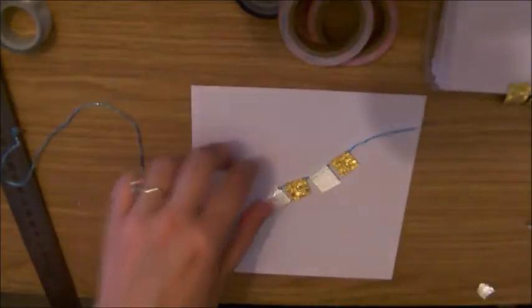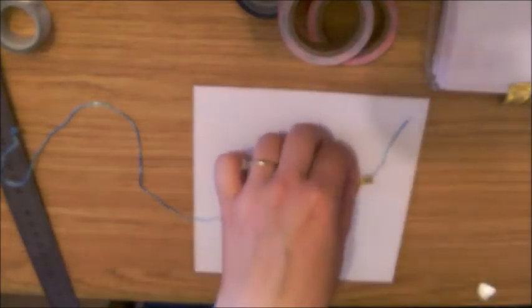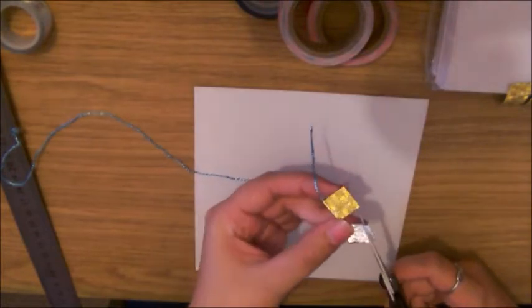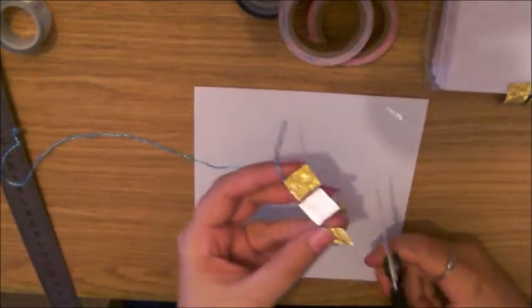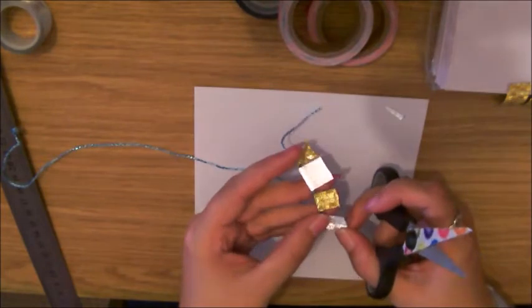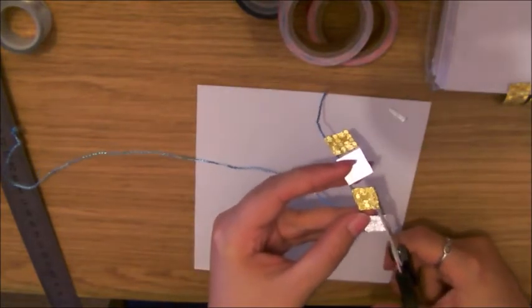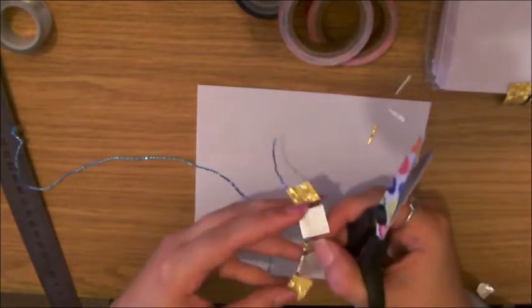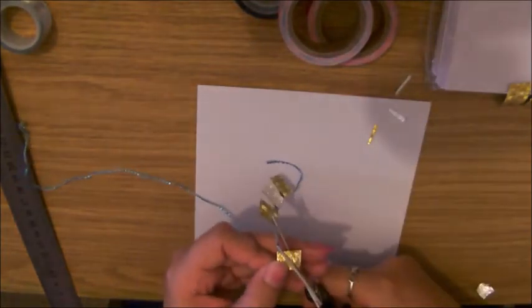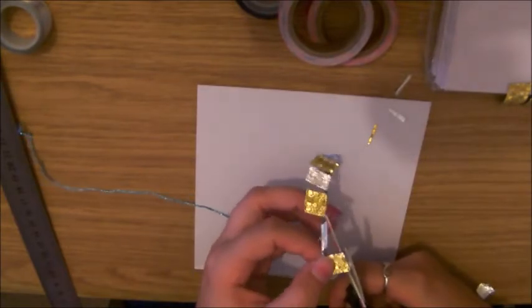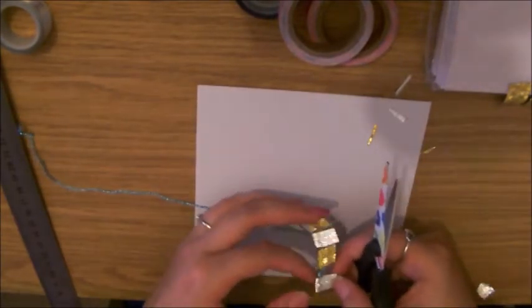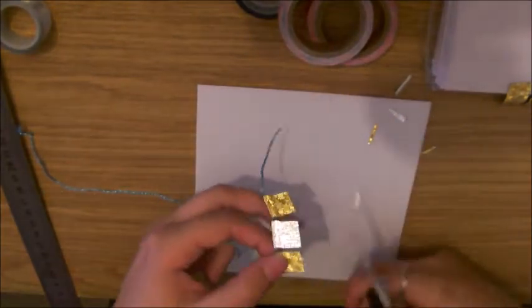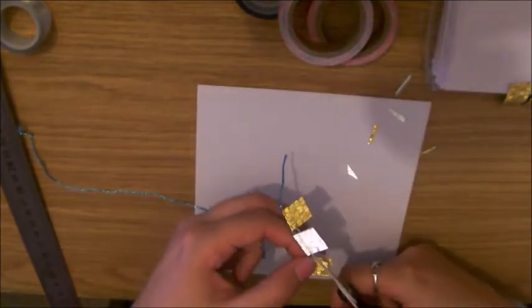So once you've done that it will look something like this. And you just want to trim up the edges so they're all the same size, because they've always looked a bit weird. So just trim them up to the same length. And then you can shape them. Obviously you can keep the square flags if you like, but I like to make them different shapes. I'm just going to cut off a little triangle at the bottom of each one.